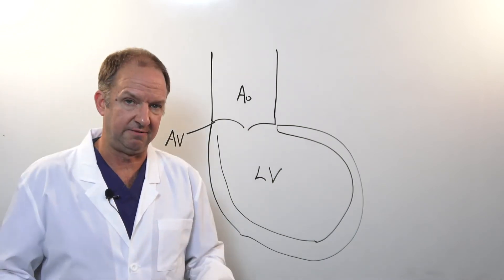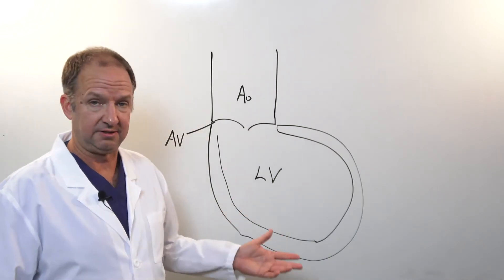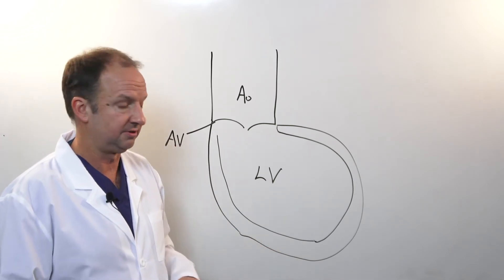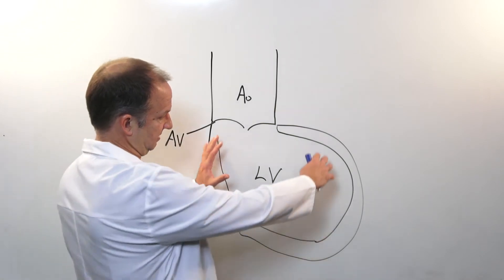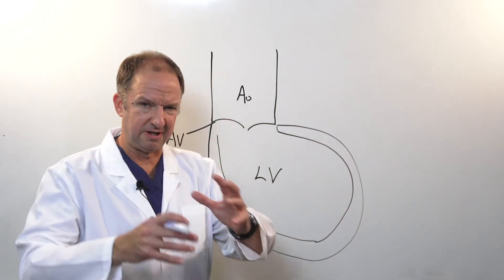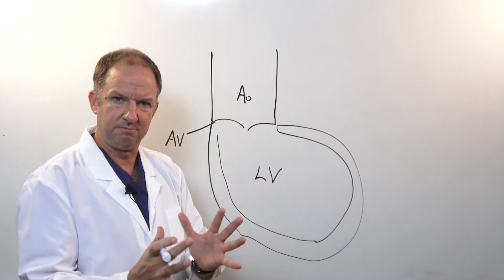When somebody has heart failure because of a heart attack, a virus, or any number of diseases that can cause heart failure, the heart becomes enlarged and stretches out. It becomes almost like a bag. It's not effectively pushing blood out of the heart.